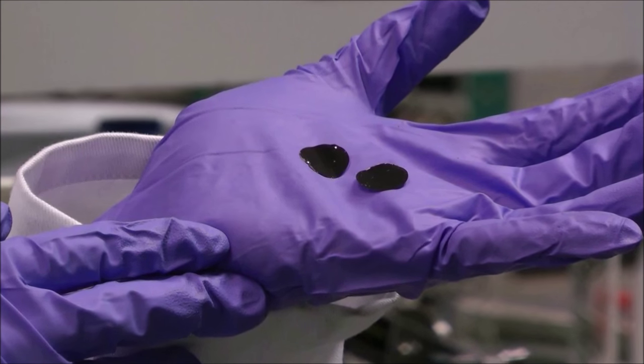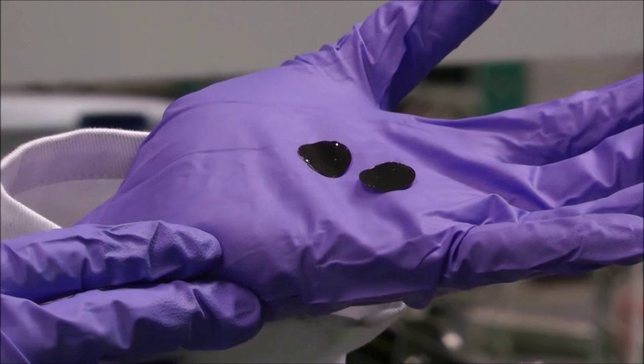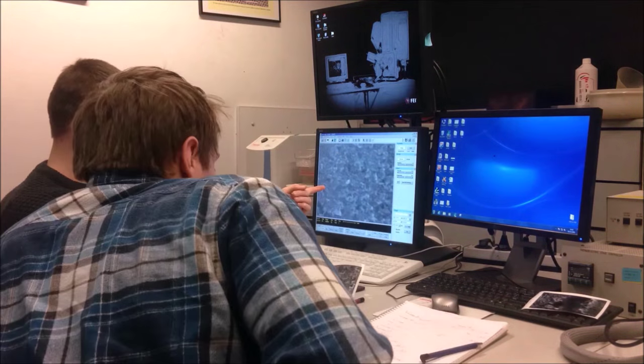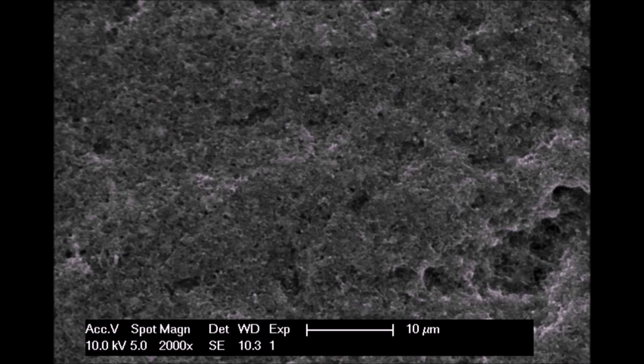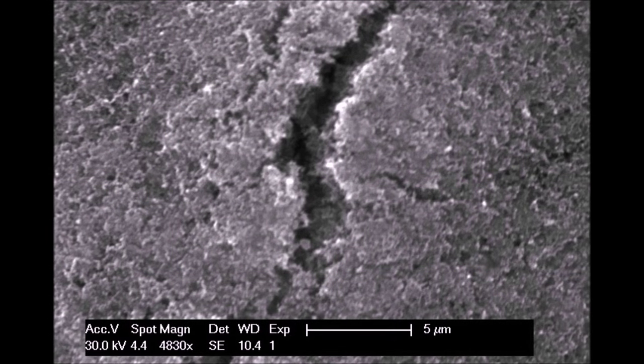But what if we want to know about the surface of the electrodes themselves? For that we use scanning electron microscopy. We can examine images of the electrode surface for porosity, binder distribution, and surface damage from repeated charging and discharging of the supercapacitor.